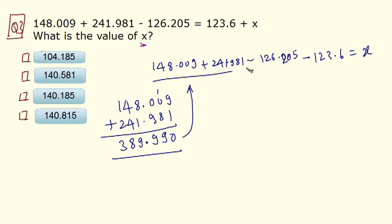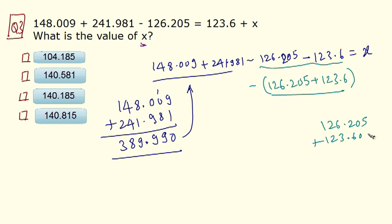And then we have to subtract from it the addition of these two terms. So this becomes minus if we put on brackets. So this becomes 126.205 plus 123.6. So let's add these: 126.205 plus 123.600. So 5 plus 0 is 5. 0 plus 0 is 0. 6 plus 2 is 8. 6 plus 3 is 9. 2 plus 2 is 4. 2 plus, I am sorry, 1 plus 1 is 2. So you have 249 going here.